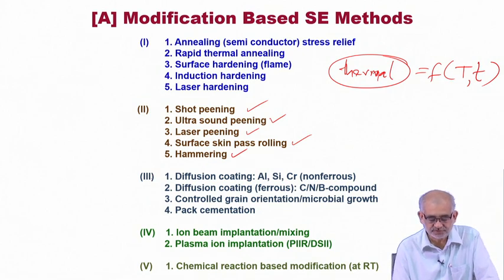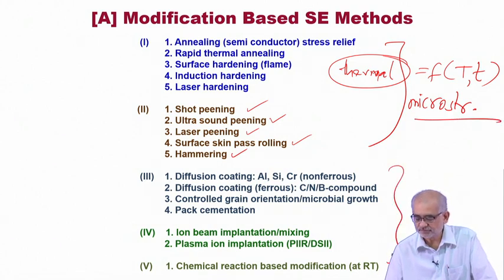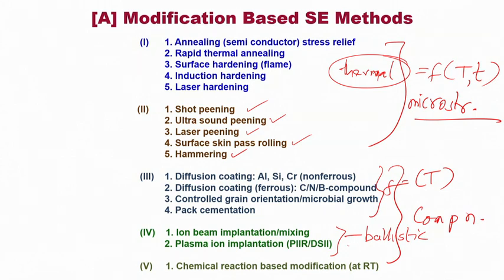Groups 3, 4, and 5 involve changing the composition. Changes can be made either by thermally activated diffusion — where temperature determines the depth of penetration — or by plasma ion implantation and ion beam implantation, which are ballistic processes. Plasma ion implantation is also temperature-dependent. In all cases, we modify the surface composition and hence certain surface-dependent properties.